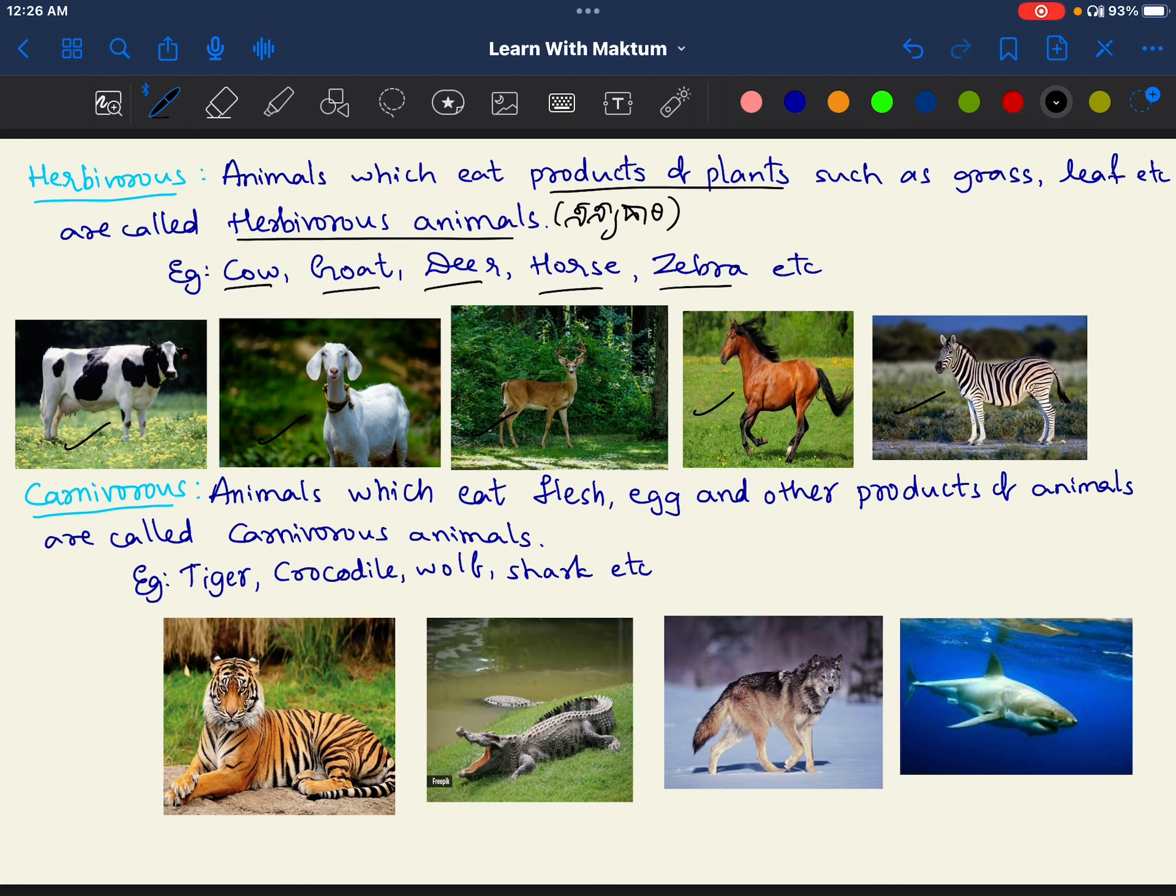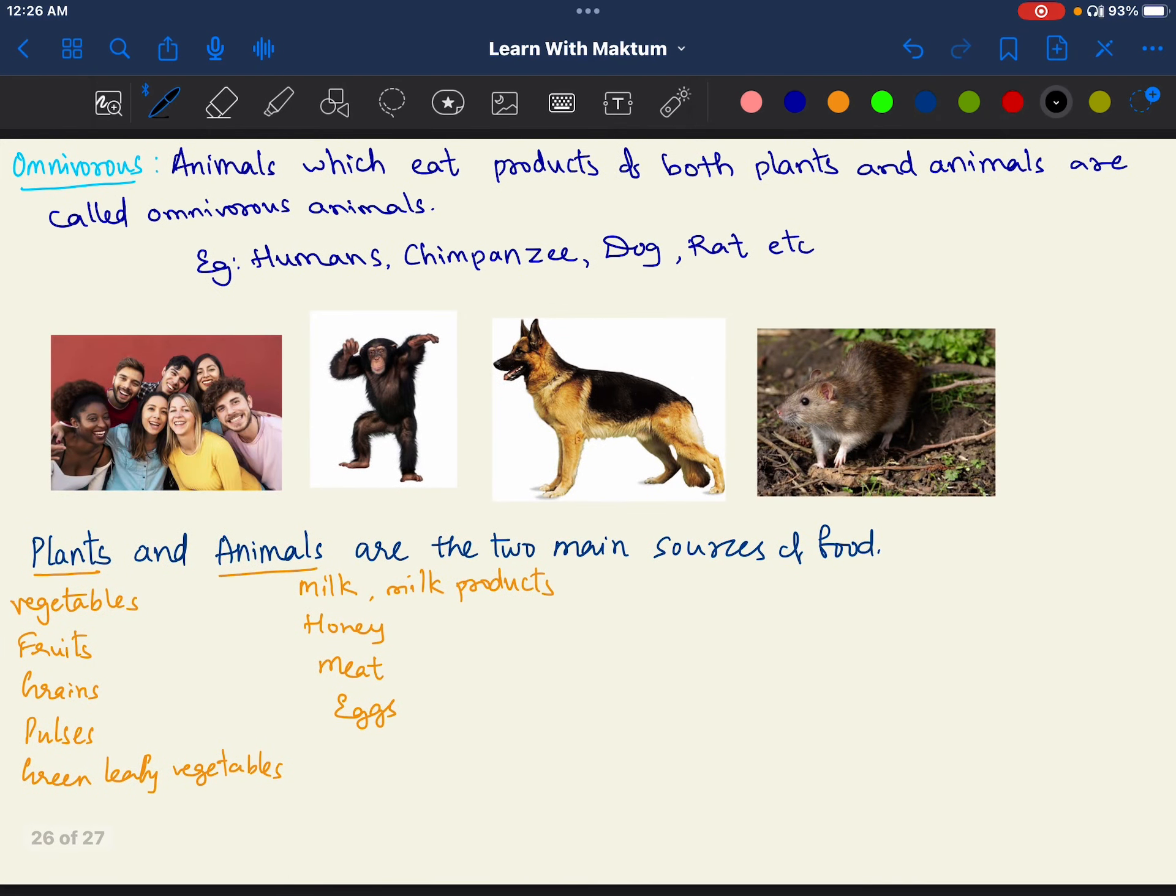Opposite to them are carnivorous. Carnivorous eat the animals or the products of animals. We call them as carnivorous animals. They eat products of animals. Example: tiger, crocodile, wolf, shark, etc. These are carnivorous animals.